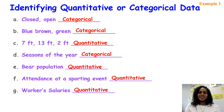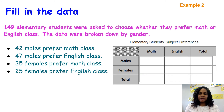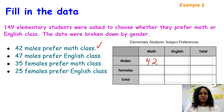Workers' salaries are quantitative because that is a number. For our second example, we're going to fill out a table and then use the information to analyze the data. It says 149 elementary students were asked to choose whether they prefer math or English class, with data broken down by gender. We have 42 males that prefer math, and 47 males that prefer English.